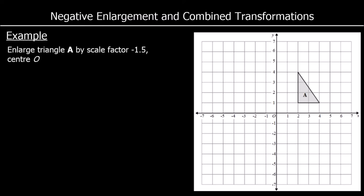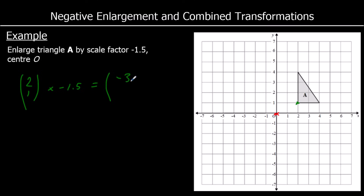Here's a different one — we've got a scale factor of minus 1.5. The centre of enlargement is at the origin, and I'm just going to take it one point at a time. I have a green point; to get there from the centre is right 2, up 1 — so the vector is (2, 1). The scale factor is minus 1.5, so 2 times minus 1.5 gives negative 3, and 1 times negative 1.5 is negative 1.5. So to get to my green point now, I'm going back 3, down 1.5.